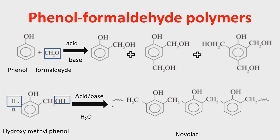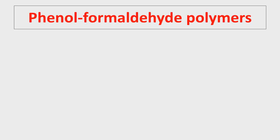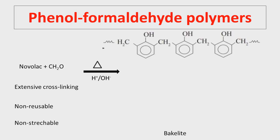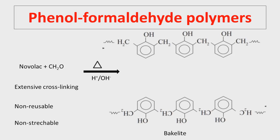Novolac is used in paints. Taking an extended version of Novolac and treating it with formaldehyde in the presence of acid and base as a catalyst leads to extensive crosslinking. Because of this crosslinking they become non-reusable, thermosetting — meaning on heating they become hard — and non-stretchable. The polymer formed is known as Bakelite. To draw the structure of Bakelite, use the monomer of Novolac, repeat the structure in the opposite direction at the bottom, and connect the para position with a CH2 group.